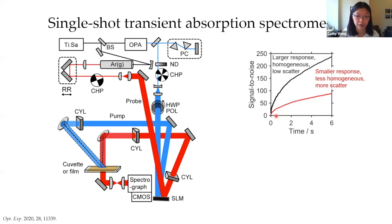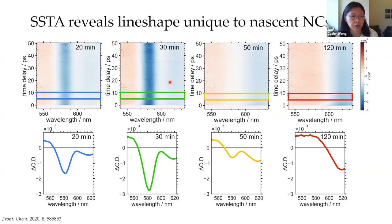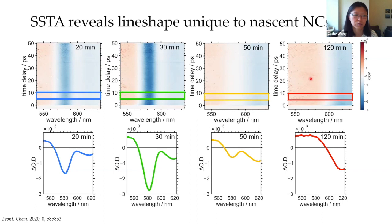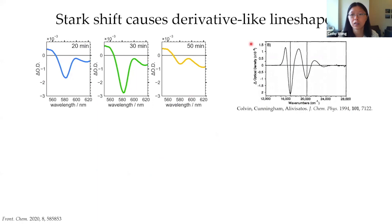These are the single-shot transient absorption spectra at a number of different times during our nanocrystal synthesis. After two hours of synthesis, this is essentially the type of spectrum and line shape commonly reported in the literature for these nanocrystals — stable, well-capped nanocrystals are what people usually measure. However, in younger nanocrystals there are definitely interesting line shapes that don't exist in the fully formed ones. If we take a slice, we see these oscillatory line shapes, which look a lot like line shapes reported in the literature for electroabsorption measurements.